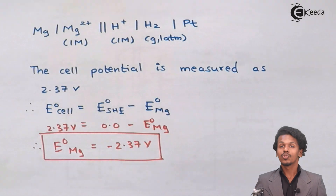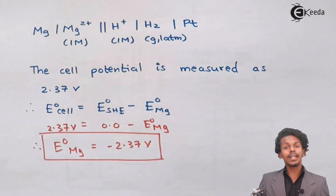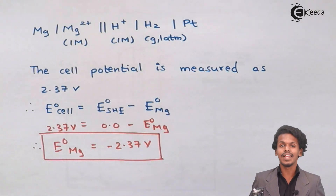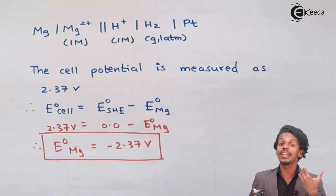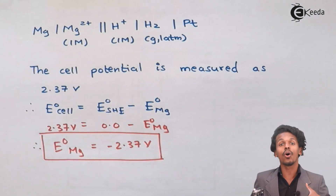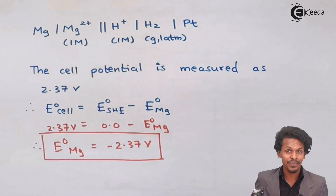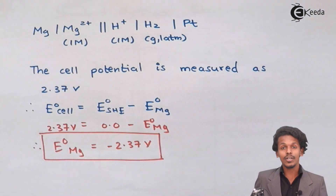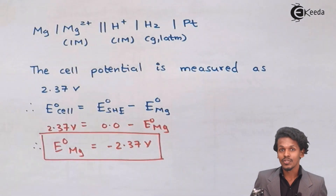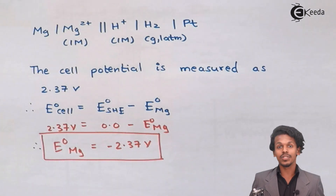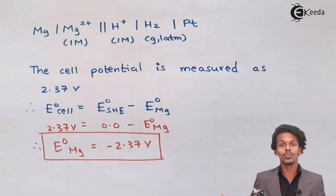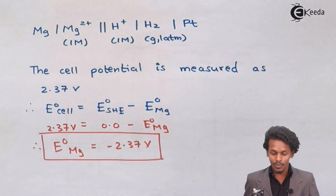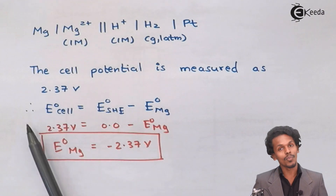It is a very simple device. If you connect any electrode with the SHE, the overall cell potential you observe will be the electrode potential of the other electrode, because the electrode potential of SHE is 0.0 volt. Depending on whether it acts as anode or cathode, you can determine it easily using this formula.